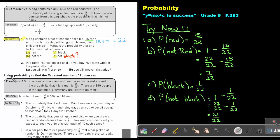Let's look at the final part. Using probability to find the expected number of successes. Example 18. In a television audience, if one person is picked at random, the probability that it's a man is 3 out of 5. There are 360 people in the audience.